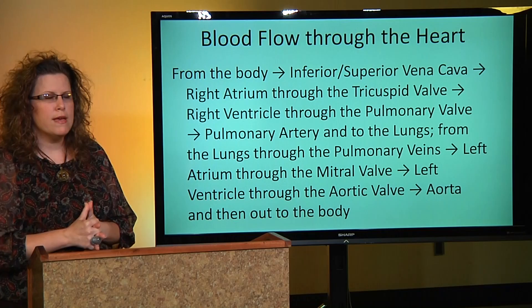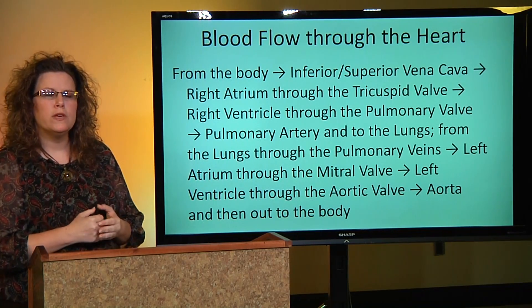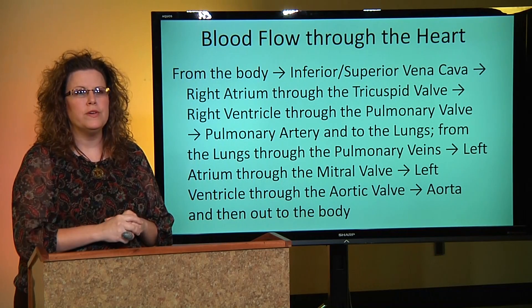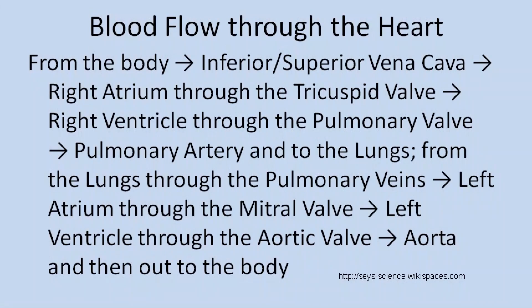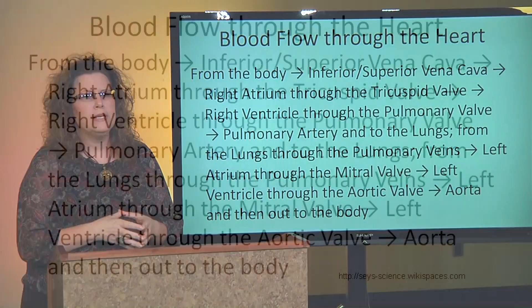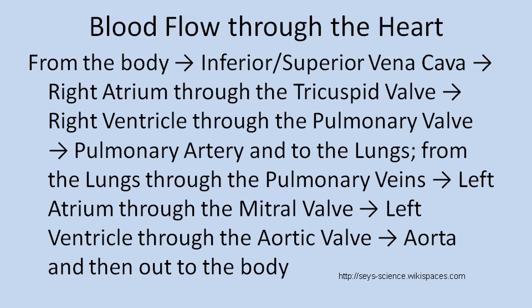This slide is a little wordy, but the next slide will look at a picture of the heart and talk through the blood flow. The blood comes from the body — from the lower part through the inferior vena cava and from the upper part (arms and head) through the superior vena cava. The blood then goes into the right atrium, through the tricuspid valve, and into the right ventricle. From the right ventricle, blood goes through the pulmonary valve, through the pulmonary artery, and out to the lungs.